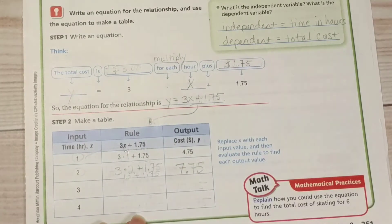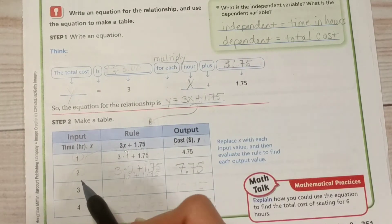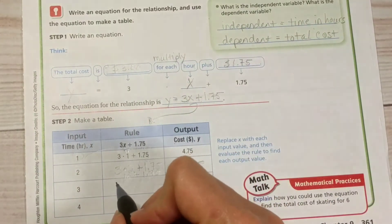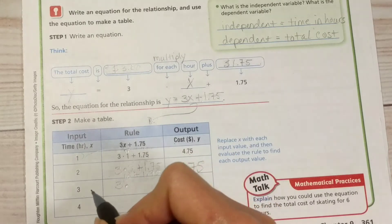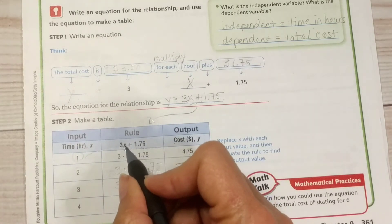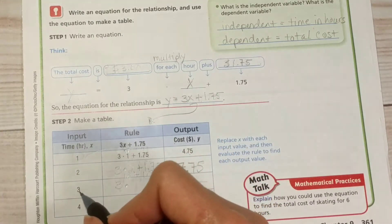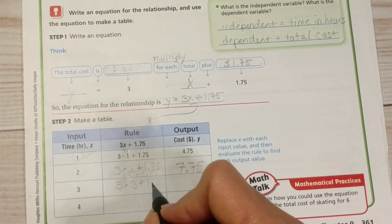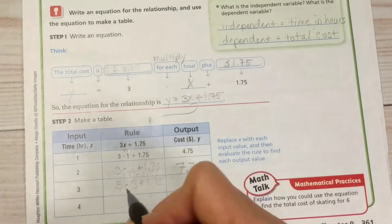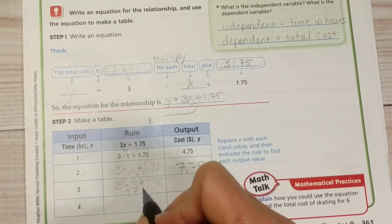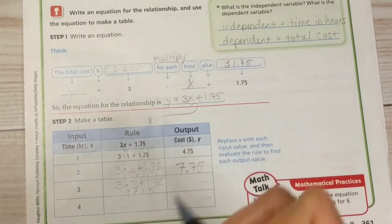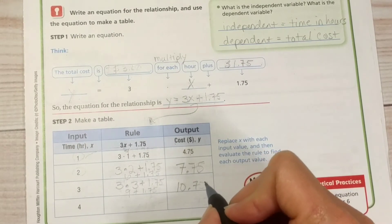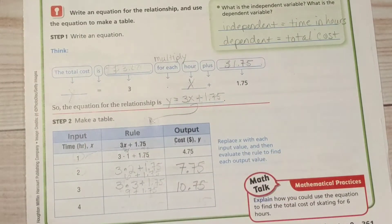That would be my total cost for 2 hours of skating. For 3 hours of skating, what's that going to cost? 3 times 3 plus $1.75. So that would be 9 plus $1.75, which gives us a total of $10.75.